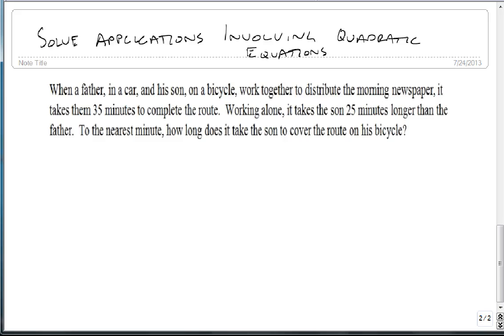When a father in a car and his son on a bicycle work together to distribute the morning newspaper, it takes them 35 minutes to complete the route. Working alone, it takes the son 25 minutes longer than the father. To the nearest minute, how long does it take the son to cover the route on his bicycle?